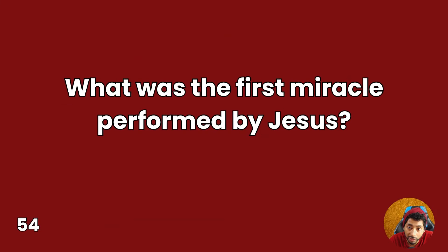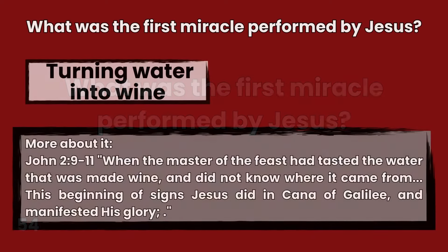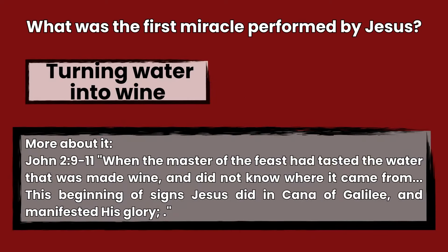Question 54: What was the first miracle performed by Jesus? Answer: Turning water into wine. John 2:9-11 — When the master of the feast had tasted the water that was made wine and did not know where it came from, this beginning of signs Jesus did in Cana of Galilee and manifested his glory.